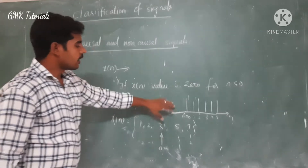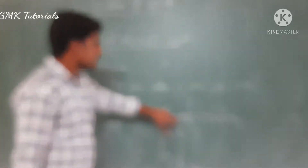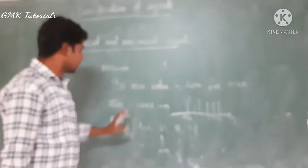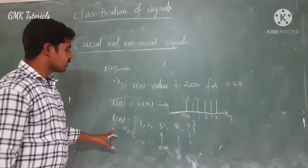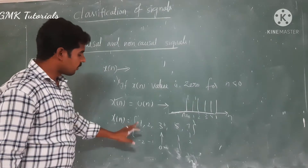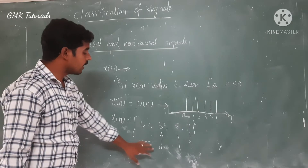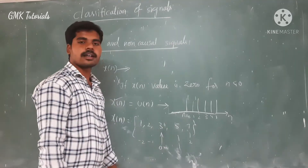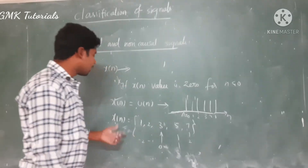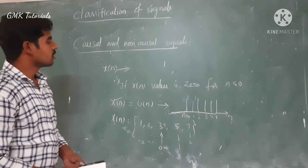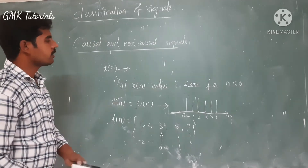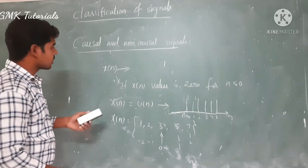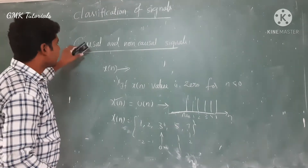Therefore these kinds of signals are not causal signals. Our example showed that x of n is equal to 0 for n less than 0 is the condition for causal signals. If x of n is equal to some value for n less than 0 also, those kinds of signals are generally called non-causal signals. So this is a brief introduction of both causal and non-causal signals.